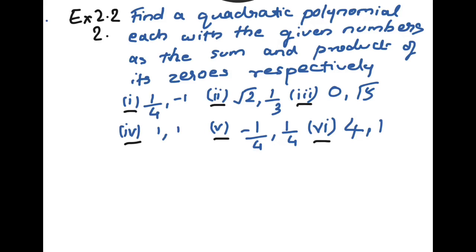The sum of zeros is alpha plus beta, and the product of zeros is alpha multiplied by beta. From the textbook, page number 29, if alpha and beta are zeros of the quadratic polynomial p(x) = ax² + bx + c, where a is not equal to zero, then x minus alpha and x minus beta are the factors of p(x).